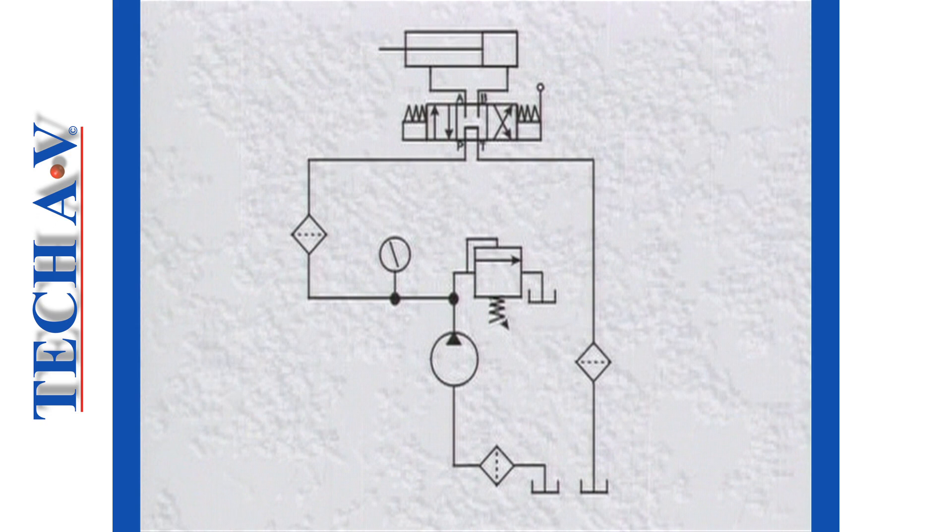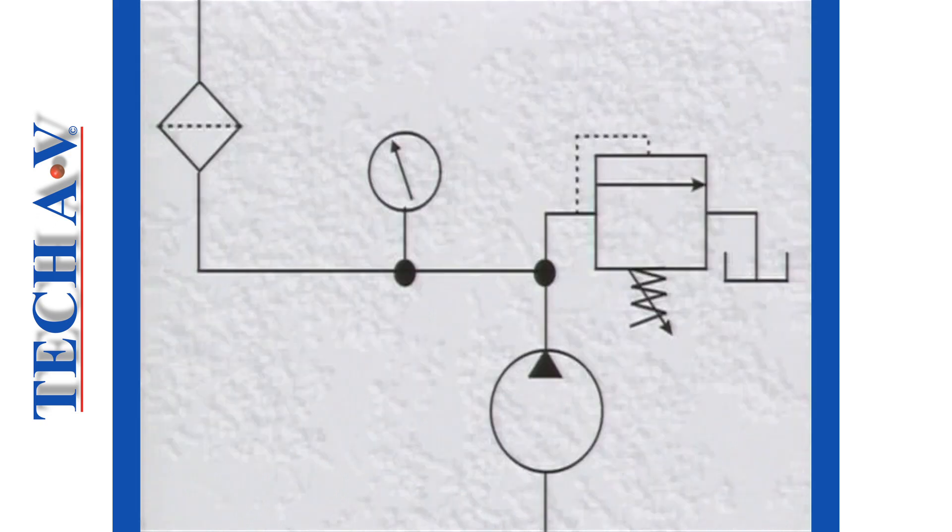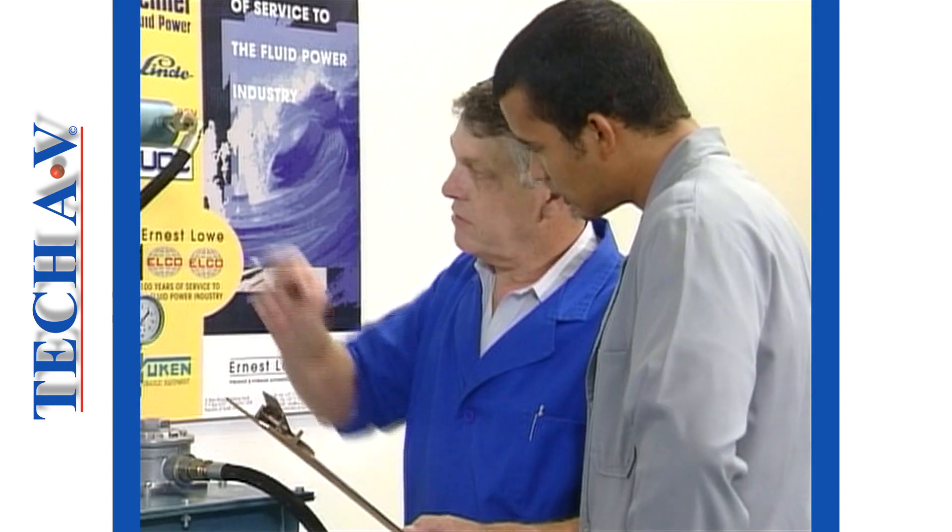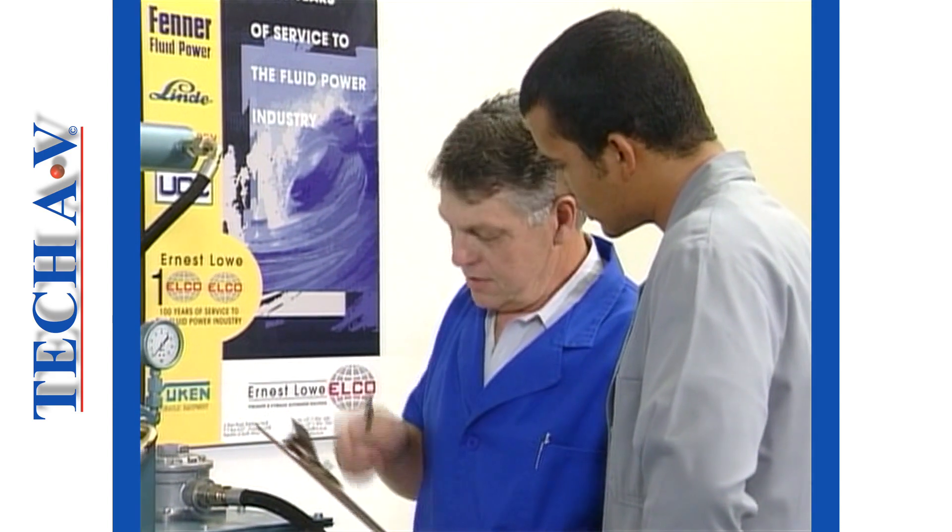A circuit diagram is essentially a plan of a system, indicating the various components, connections and other details of the system. We use circuit diagrams when, for example, we're trying to trace problems.